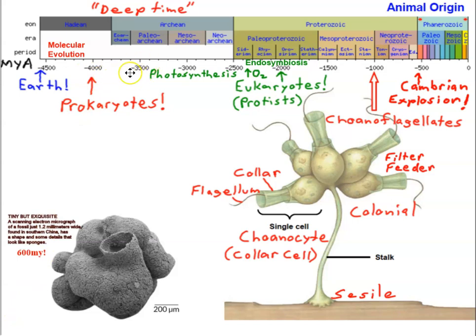About 3.5 billion years ago, prokaryotes obtained the ability to photosynthesize, and photosynthesis produces oxygen as a product. So at the same time, oxygen started being added to the oceans first, then the atmosphere. Oxygen built up slowly over about a billion years. Just following the buildup of oxygen, we see the endosymbiosis of prokaryotic cells — prokaryotic cells coming together, forming symbiotic relationships with each other.